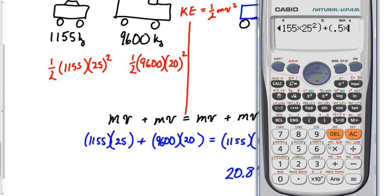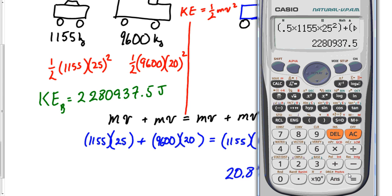2 million, 9,600 times 20 square. Means that the total kinetic energy on the left is, what is that, 2,280,937.5 joules. That's all the kinetic energy, and we'll call this before. So that's a lot of kinetic energy.